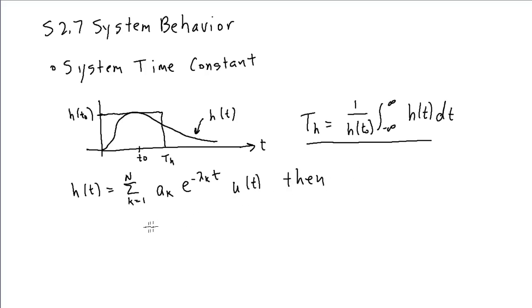then th is just a weighted sum of all of the time constants. The time constants are the reciprocals of the characteristic roots. And so, th, for this case, turns out to be the sum of k equals 1 to n of ak over lambda k divided by the sum of the mode amplitudes, the ak values.